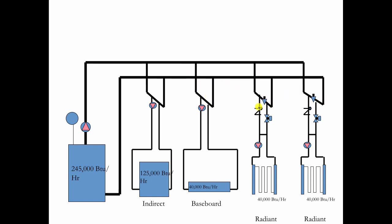This is the same job we looked at earlier. We've got 245,000 BTUs, 125,000 BTU on the indirect, 40,000 on the baseboard and the two radiants. So since we're working it this way, we're going to take the hottest stuff first and the coolest stuff afterwards.